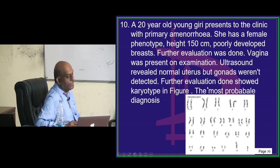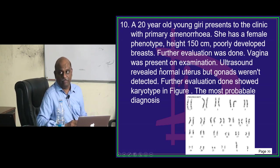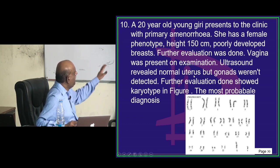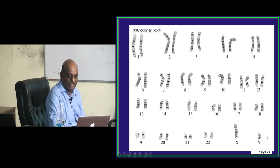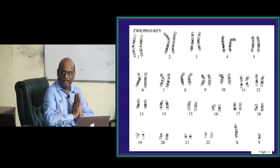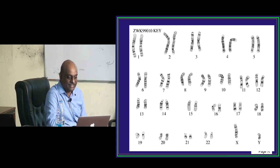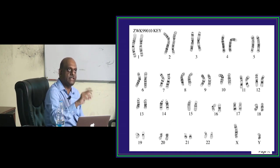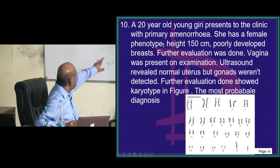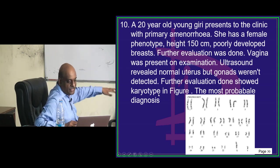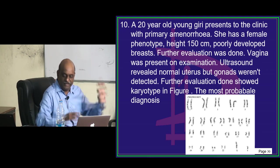A 20-year-old presents with primary amenorrhea. She has a female phenotype, height 150 cm, poorly developed breasts, vagina present. Ultrasound revealed a normal uterus but gonads not detected. The karyotype is being shown. Satya says different channel for nurses — let's keep nurse business and MD business separate.